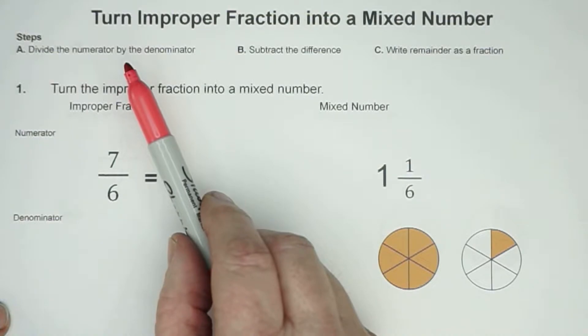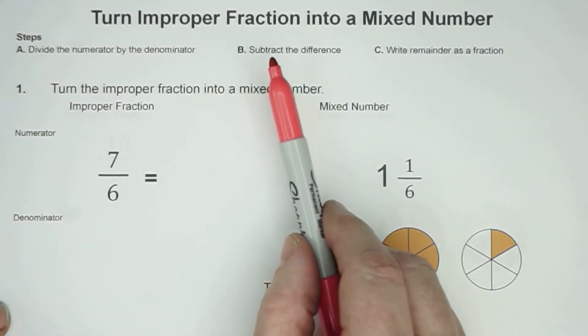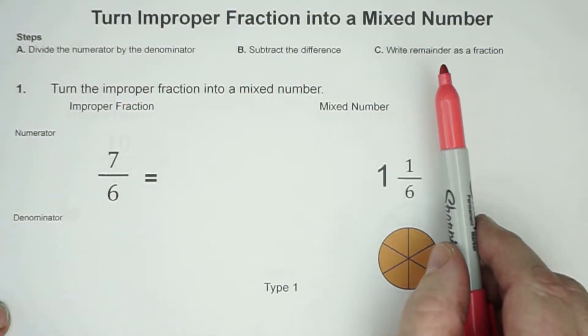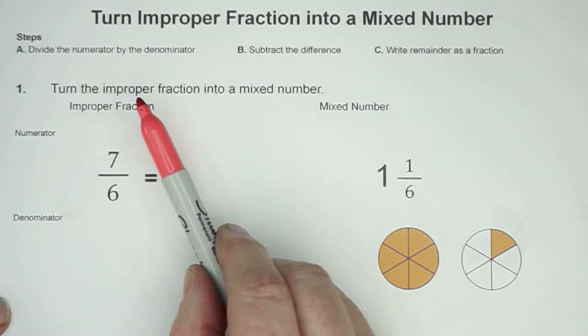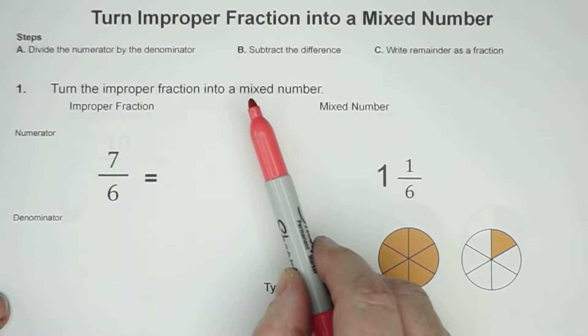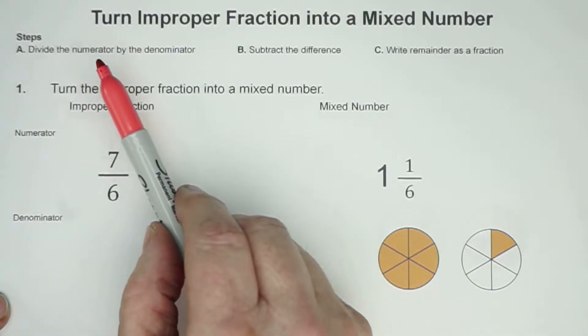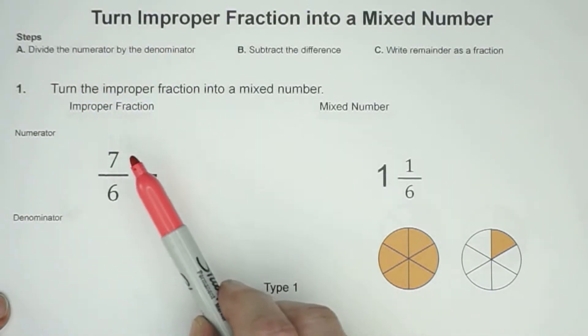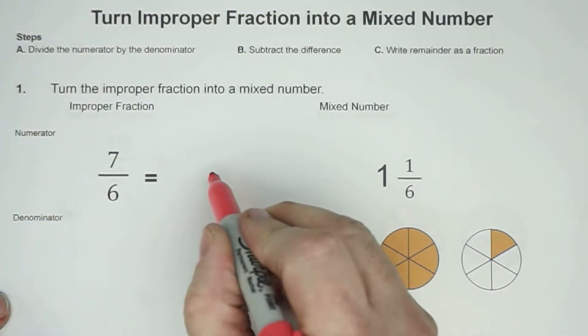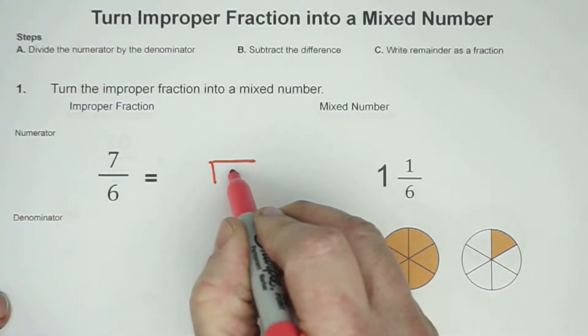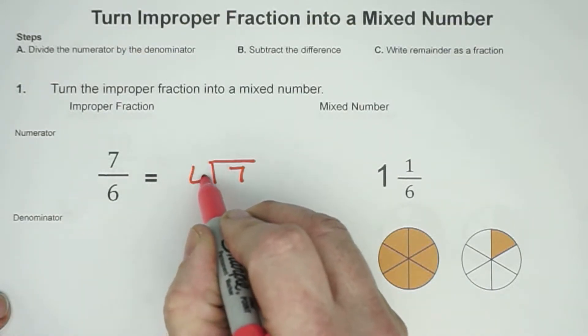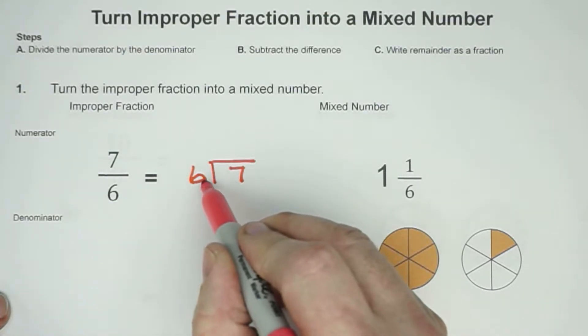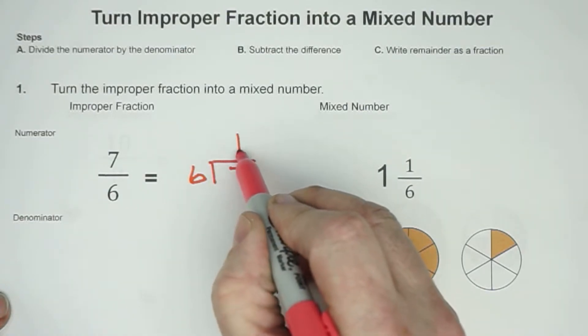Our steps would be to divide the numerator by the denominator, subtract the difference, and then write the remainder as a fraction. So, we're going to turn the improper fraction into a mixed number. Our first step is to divide the numerator by the denominator. So our numerator is 7, and we're going to divide it by our denominator of 6.